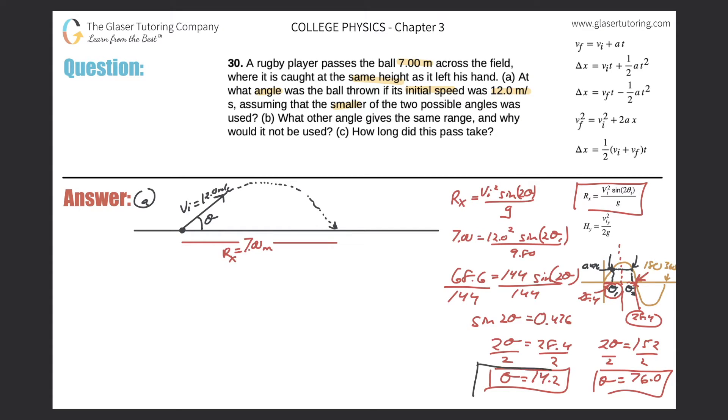Letter B says what other angle gives the same range? Well, we just found it: 76 degrees. And why wouldn't it be used? Think about it: if you're playing rugby, do you want to throw a high pass? Do you want this angle to be high? No, you'd want a nice low pass, a nice low angle, rather than some high angle, because you'd increase the chance for an interception.